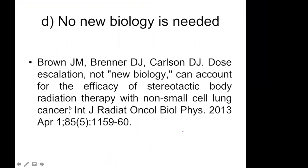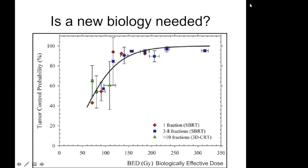Martin Brown, David Brenner, and others argue no new biology is needed. They examined radiation response to different fractions in non-small cell lung cancer and showed that a single curve can fit all the data — tumor control probability as a function of biologically effective dose (BED) using the alpha-beta model. Single-fraction data (red), 3–8 fraction SBRT (blue), and more than 10 fractions (green) can all be fit by a single line.